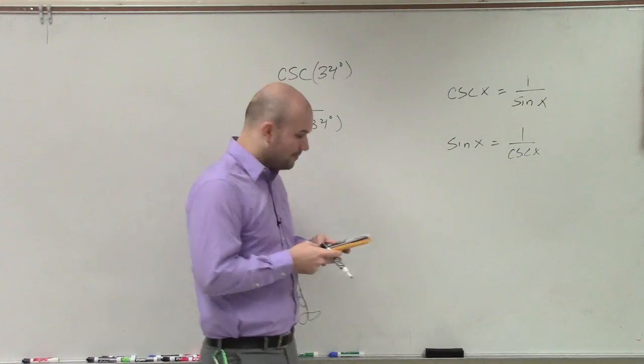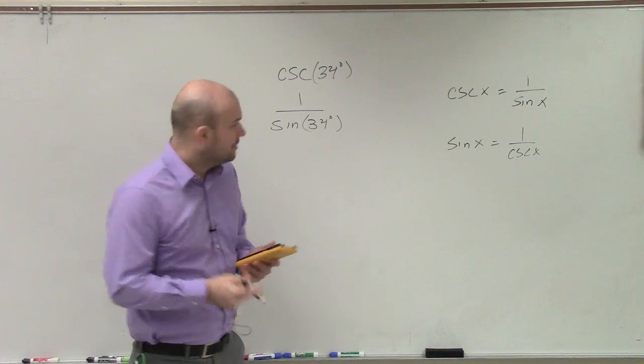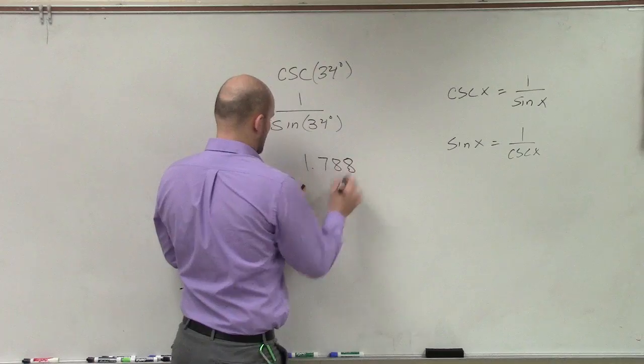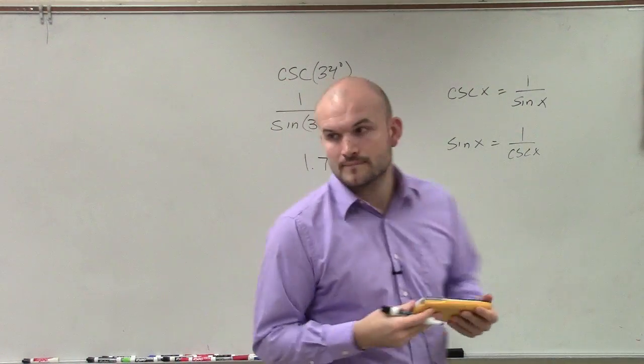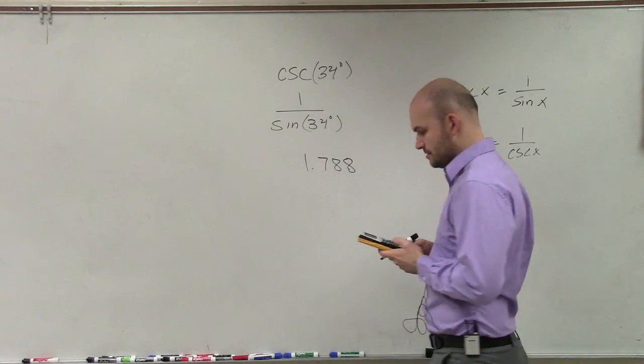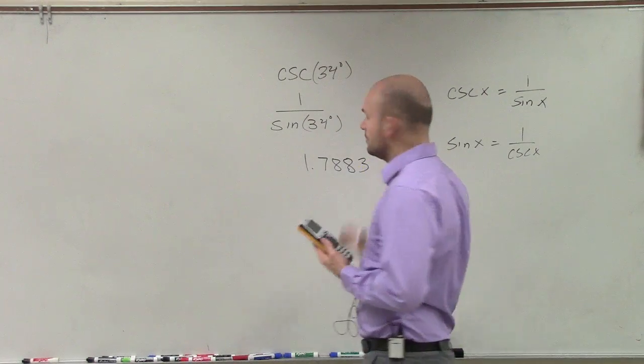And then I just do 1 divided by the sine of 34. And that is going to equal 1.788, as rounded as we need. Four decimal places? It's three. So there you go.